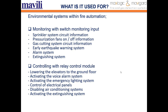With relay control modules, you can control: elevator lowering to ground floor, activating the voice alarm system, activating the emergency lighting system, control of electrical panels, disabling air conditioning system, activating extinguishing system, opening/closing smoke dampers, activating pressure fans, and closing solenoid valves. If another system has a relay, you can control or monitor it with these modules.